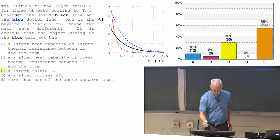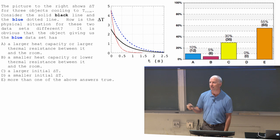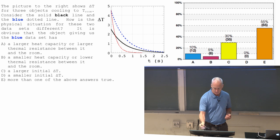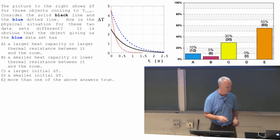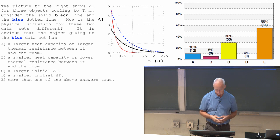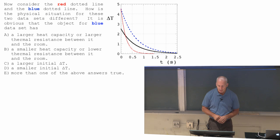The way you would decide about A and B is you would look for a half life. That's a quick way to find out. Is it dropping down to half the value in about the same amount of time? If it is, then it's got approximately the same heat capacity times thermal resistance. You never know for sure which is larger just from this number, but it wouldn't be obvious that either was different.